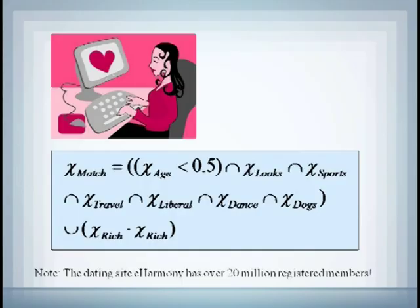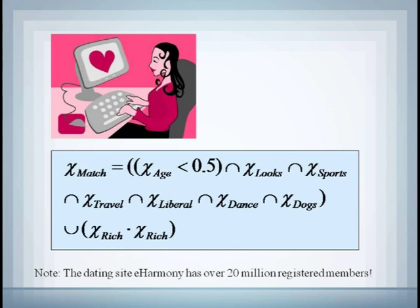And suppose that instead of just a classroom of people, you had 20 million people in your dating service database. You could easily run a computer search using the criteria for your perfect date, and the computer should be able to return a list of all the people that reasonably meet your fuzzy requirements, and sort them for you based on their level of membership.